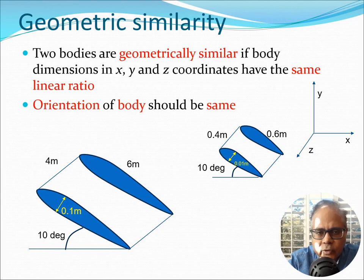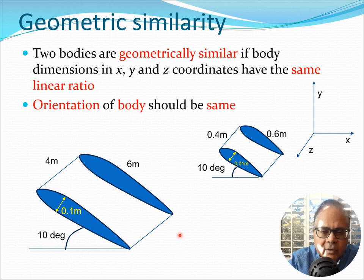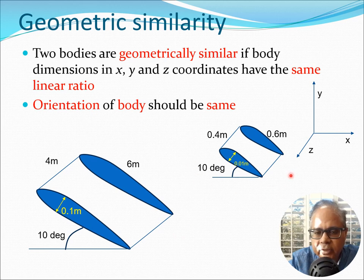Before we go into dynamic similarity, let's discuss something known as geometric similarity, with which many of you are intuitively familiar. For example, if I have a model or an actual aircraft, its wing could be something like this — the dimensions are typically very large, they could be 4 meters, 6 meters, and so on. But when I try to do a scaled model in a wind tunnel, this is going to be much smaller. Here you can see this is a 1/10th scale model, so 4 has been divided by 10 — it's become 0.4.